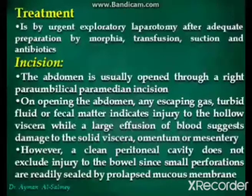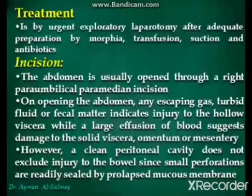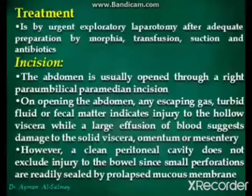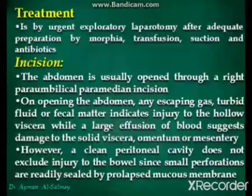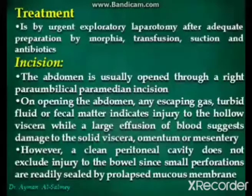Regarding treatment of abdominal trauma, once indicated, urgent exploratory laparotomy is performed after adequate preparation including morphia, transfusion, suction, and antibiotics. The abdomen is usually opened through a right paramedian incision. On opening of the abdomen, escaping gas, fluid, or fecal matter indicates injury to a hollow viscus, while a large effusion of blood suggests damage to the solid viscera or mesentery.